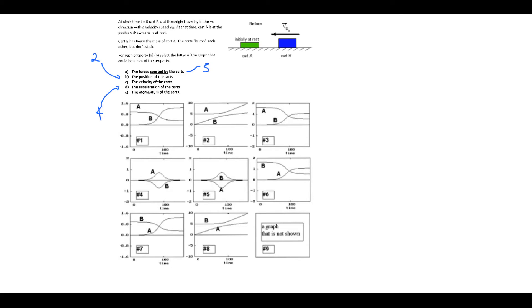We can sort of see that in terms of thinking about cart B: B is traveling at constant velocity because the gradient of the graph is constant. Then it hits cart A and decreases its velocity — so we've got a decreasing gradient, which is what you'd expect because the momentum of it has to decrease because it has to transfer some.